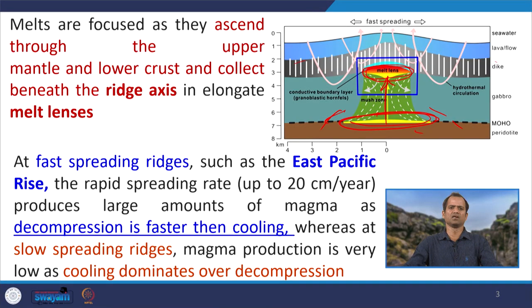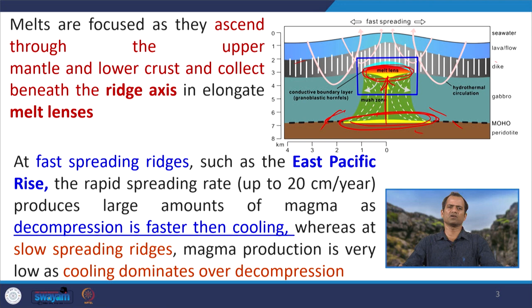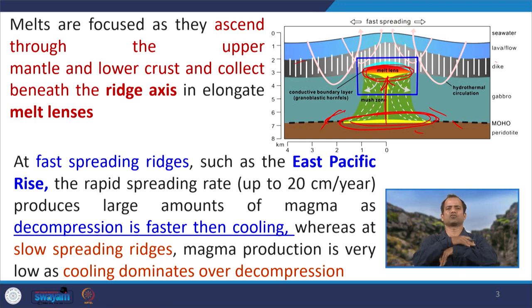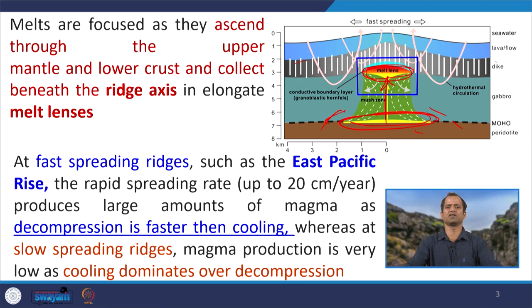The magma generating at the lower crustal and upper mantle level comes up and aligns itself along the mid-oceanic ridge magma chamber. At fast spreading ridges such as the East Pacific Rise, decompression is faster than cooling because there is frequent, near-continuous magmatic supply. One phase of magmatic supply overlaps with the next, giving less time to cool. That is why at fast spreading ridges decompression melting is faster than the cooling system.